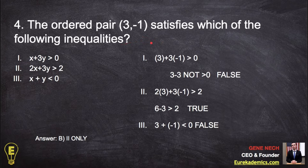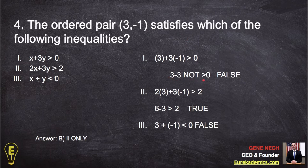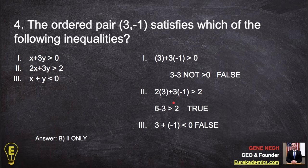If I plug three into x and negative one into y, I get three minus three is zero, zero is not bigger than zero, so false. Two times three is six, three times negative one is three, three is bigger than two, true.